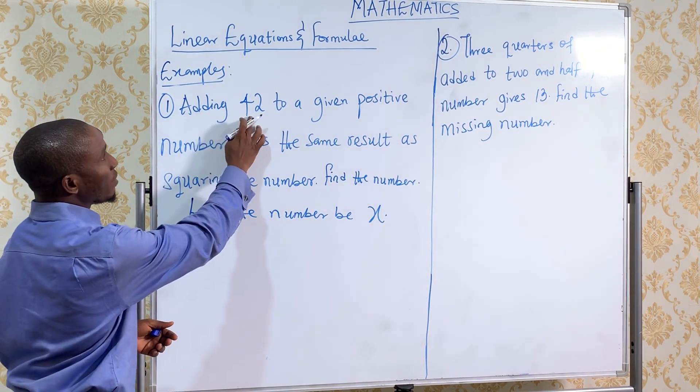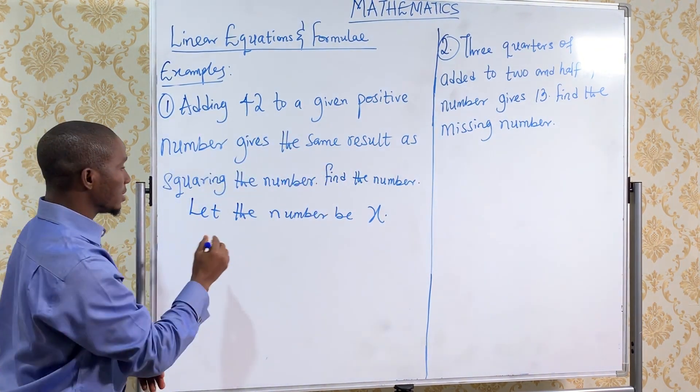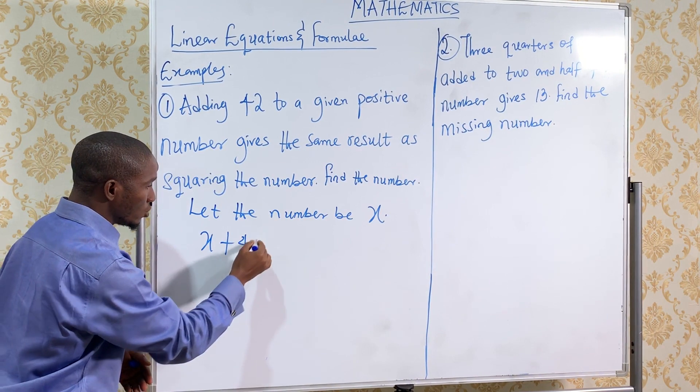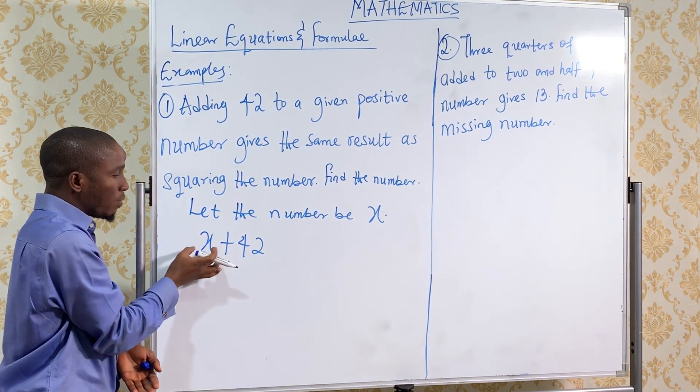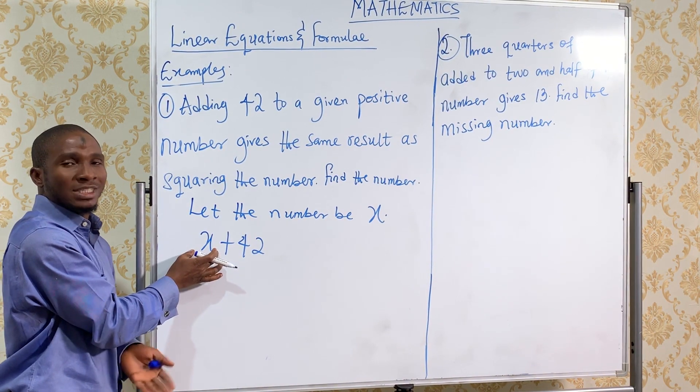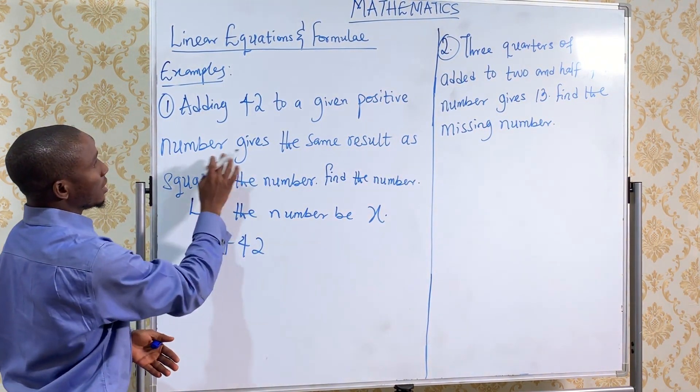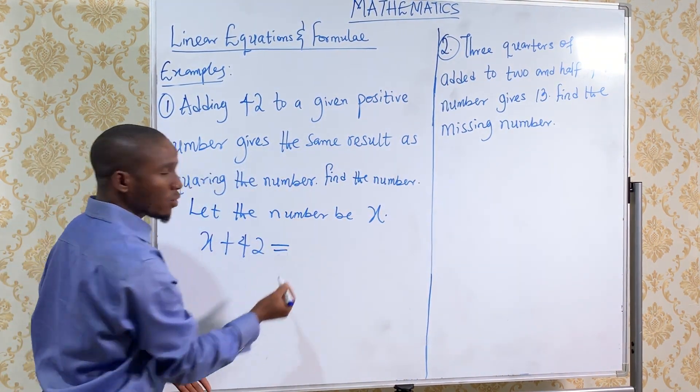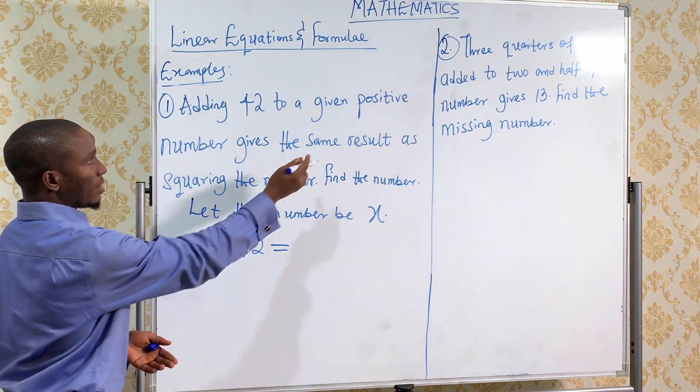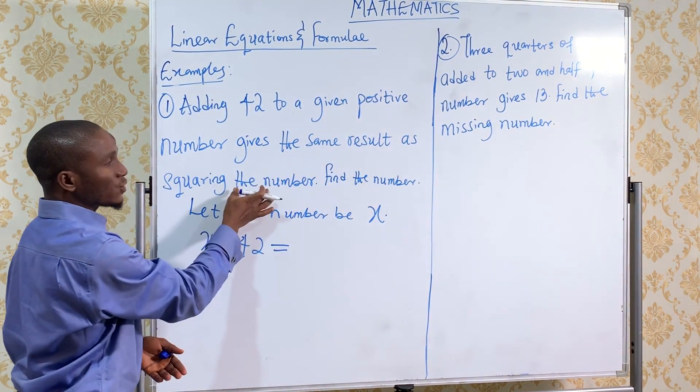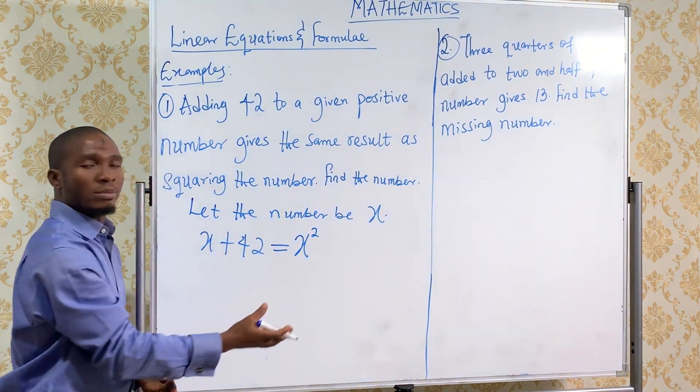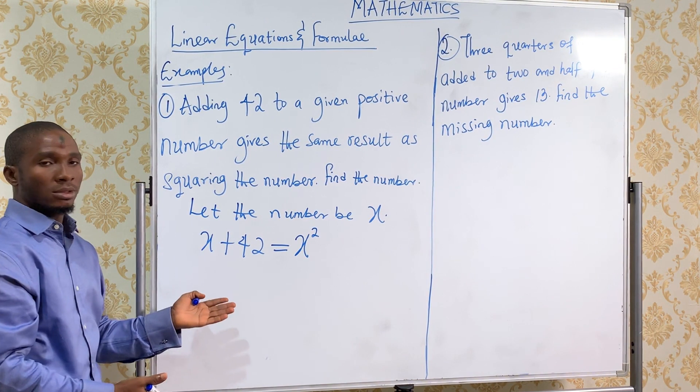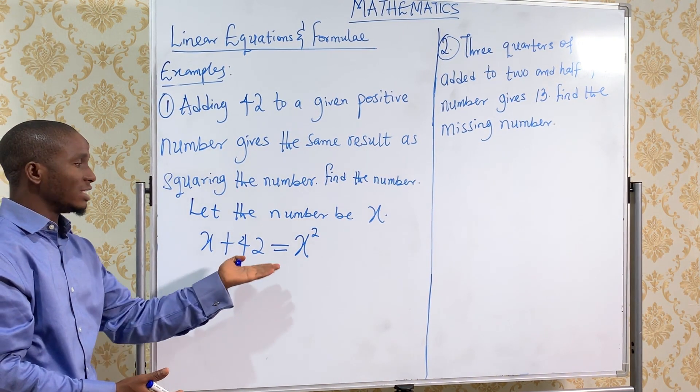Because the question says adding 42 to a given positive number, when you add 42 to the number, this is not necessarily positive, can be negative. It gives the same result as squaring the number. This equals x squared. Now find the number. This is quadratic in nature.